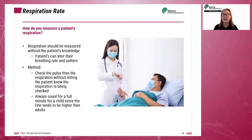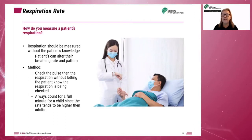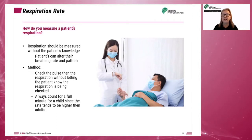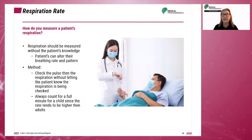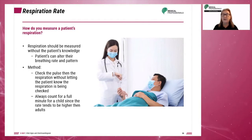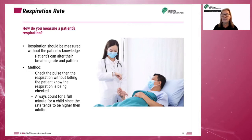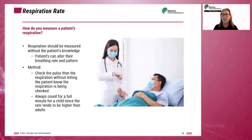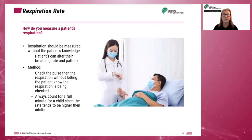Normal respiration rate is measured in breaths per minute. The normal rate for adults is 12 to 20 breaths per minute. For children under 10, the rate is 20 to 30 breaths per minute. For a teen or youth, the rate is 16 to 20 breaths per minute. Newborns have a rate of 35 to 60 breaths per minute.